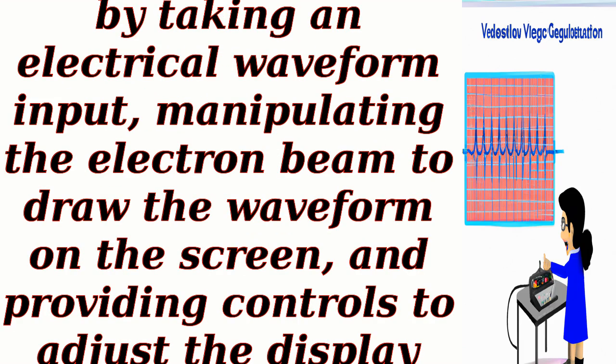Overall, an oscilloscope works by taking an electrical waveform input, manipulating the electron beam to draw the waveform on the screen, and providing controls to adjust the display settings for accurate analysis of the signal.